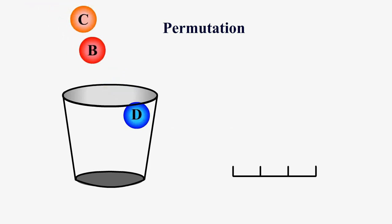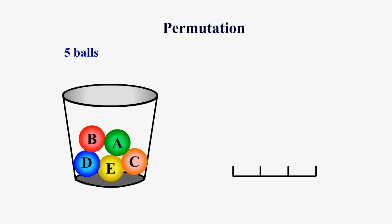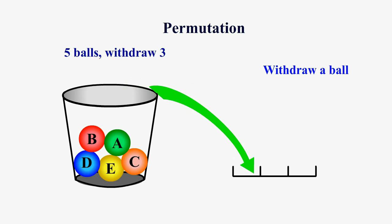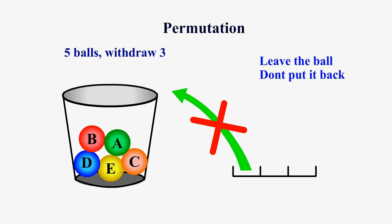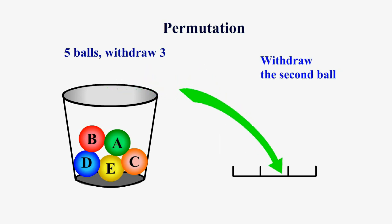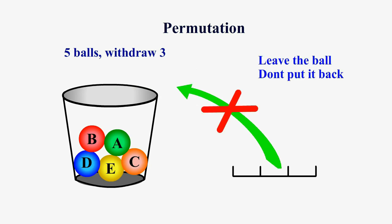The second type of counting is called permutation. Suppose that we have five balls again in the basket — ball A, B, C, D, and E. We are going to take three of them the same way as in arrangement, one by one, but the difference is now without returns. We draw the first ball from the basket; unlike in arrangement, we just leave the ball there and do not put it back. Similarly for the second ball, we draw it, leave it there, and don't put it back. For the third ball, we treat it the same way.